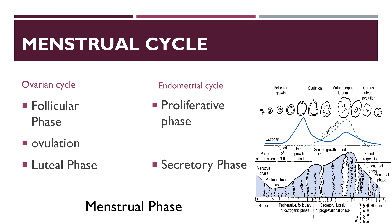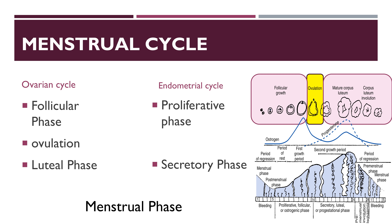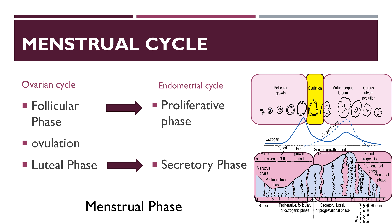The menstrual cycle is basically divided into two phases. When we talk about the ovarian cycle, these are the follicular phase and the luteal phase, separated only by ovulation. The follicular phase corresponds to the proliferative phase in the endometrial cycle, whereas the luteal phase corresponds to the secretory phase in the endometrial cycle.